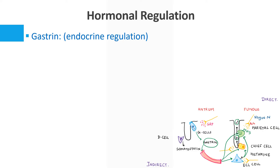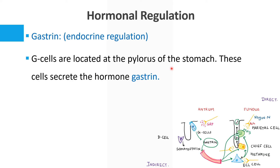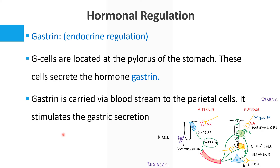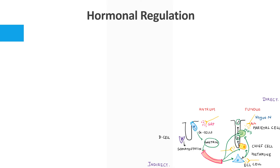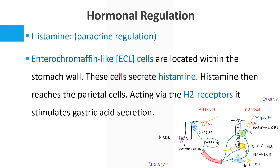For hormonal regulation: gastrin is produced from G cells located at the pylorus of the stomach. Gastrin is carried by the bloodstream to the parietal cells and stimulates gastric secretion. Histamine acts via paracrine regulation — the enterochromaffin-like cells on the stomach wall secrete histamine, which reaches the parietal cells and acts via H2 receptors to stimulate gastric acid secretion.